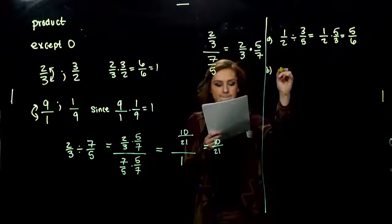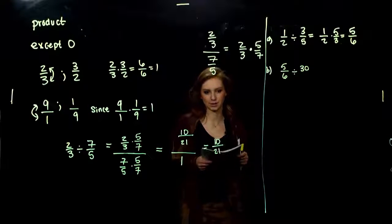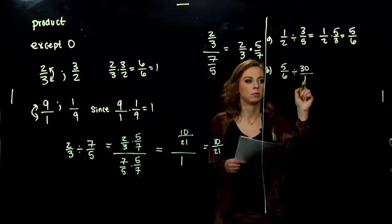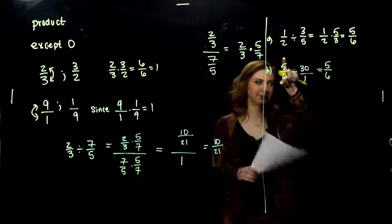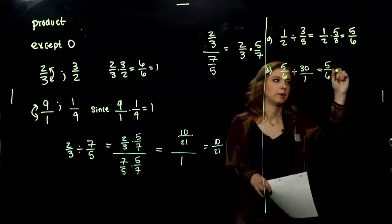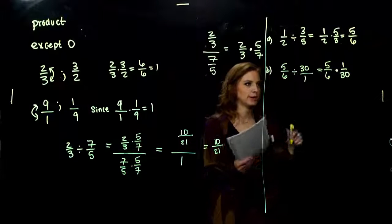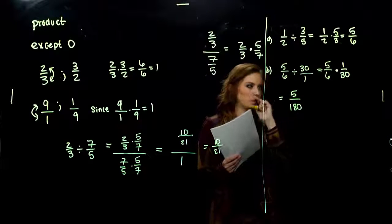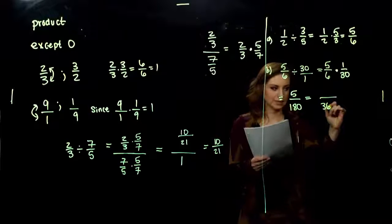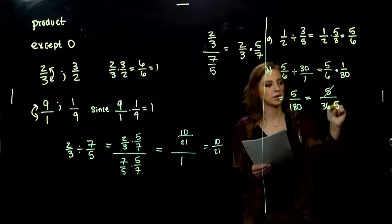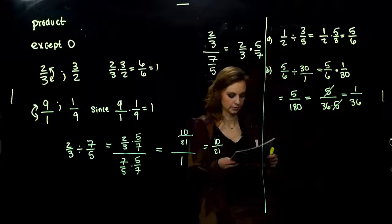What about 5 sixths divided by 30? If it's helpful, write 30 as a fraction: 30 over 1. Division means keeping the first one constant and multiplying by the reciprocal of the second, which is 1 over 30. Multiplying straight across: 5 over 180. I can break 180 into 36 times 5. Same thing divided by the same thing — those cancel. What am I left with in the numerator? I still need that placeholder: 1 over 36.